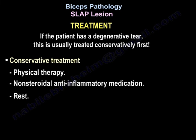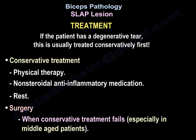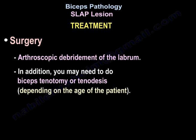What is the treatment? If the patient has a degenerative tear, this is usually treated conservatively first, including physiotherapy, non-steroidal anti-inflammatory medication, and rest. Surgery is performed if conservative treatment fails, especially in middle-aged patients. Surgery is usually arthroscopic debridement of the labrum. You may also need to do biceps tenotomy or tenodesis, depending on the age of the patient.